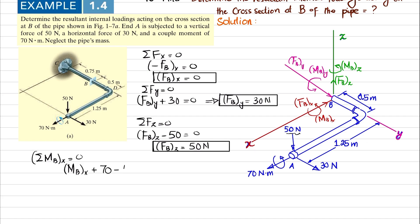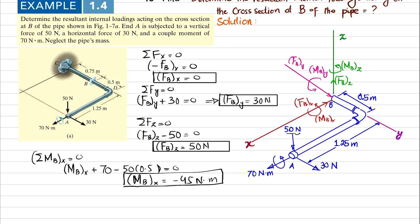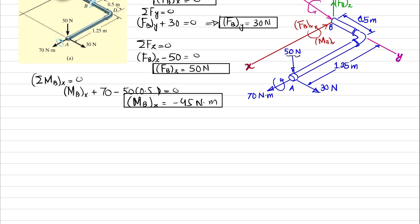So MBX plus 70 minus 50 times 0.5 equals zero. Solving this, the moment at B about the X axis comes out to be minus 45 Newton·meter. The negative sign means the assumed direction is incorrect — it should be opposite to what was initially assumed.